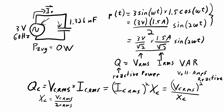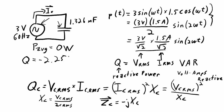One final thing to note is that by convention, reactive power to a capacitive load is defined as negative. That's because the impedance of a capacitor in rectangular notation is equal to negative j X_C. So when calculating the reactive power of this circuit, we found it was 2.25 VAR. Typically there are two ways to write that: the reactive power of that capacitor can be written as either negative 2.25 VAR, or just as 2.25 VAR and then indicate that it's capacitive reactive power.